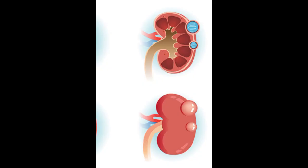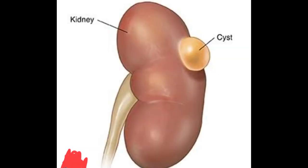This is an interesting case of bilateral renal cysts. From the picture you can understand these are called renal cortical cysts — they can present in one kidney or both kidneys. They are present at the cortical surface and exert pressure effects on the kidney.